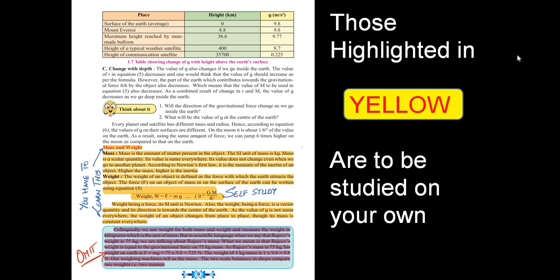Page number nine: whatever has been highlighted in yellow, the mass and weight section, can be asked to you. I cannot say will be, it can be. It's self-study; you have to prepare it on your own. But the last box that has been given to you has been omitted, so you can just ignore that box for the current year exam.